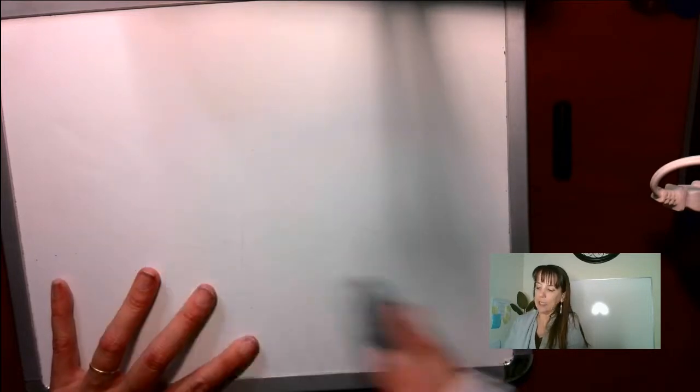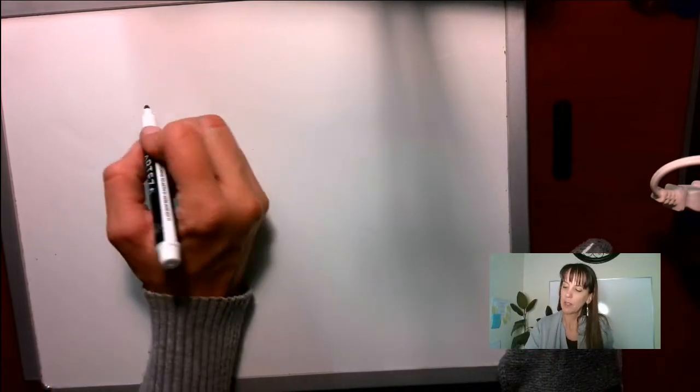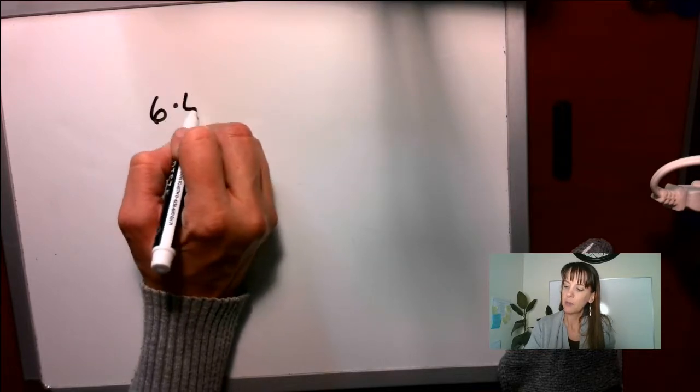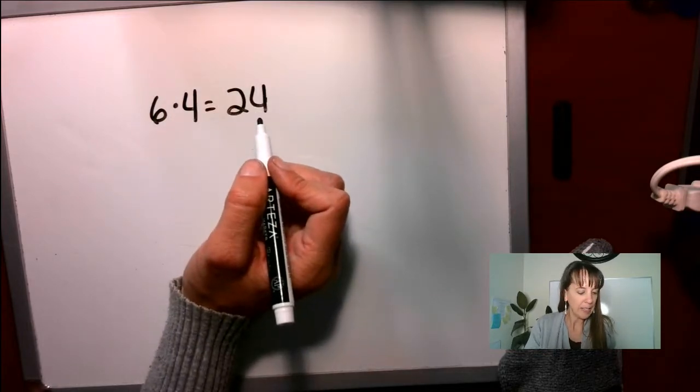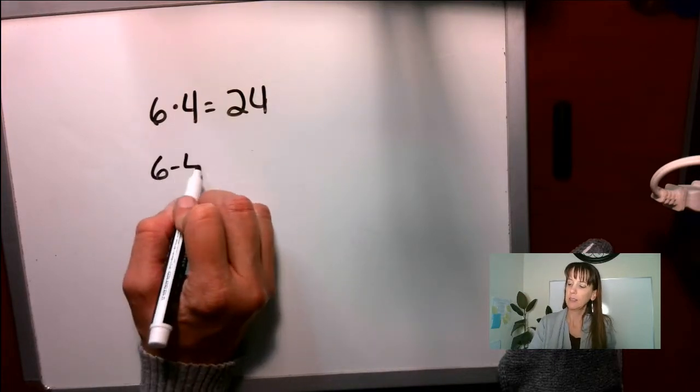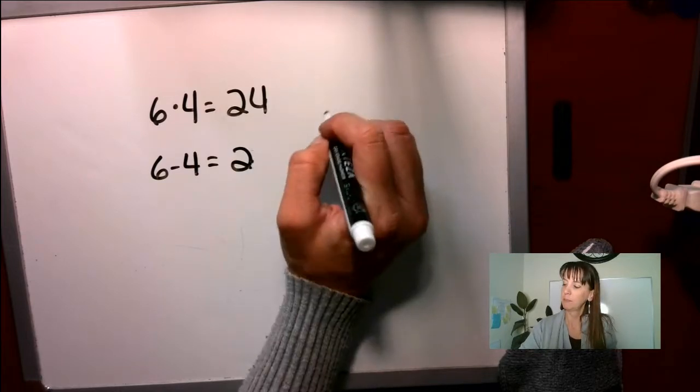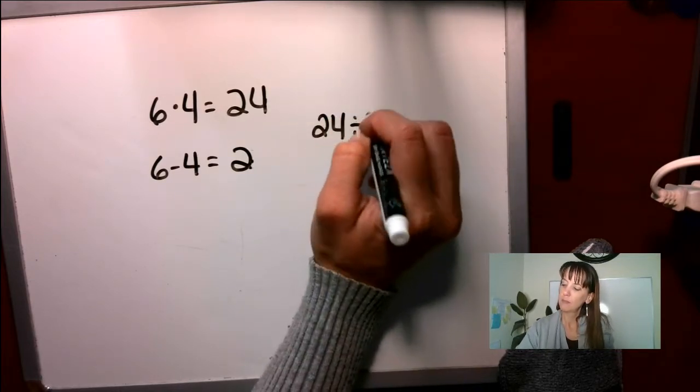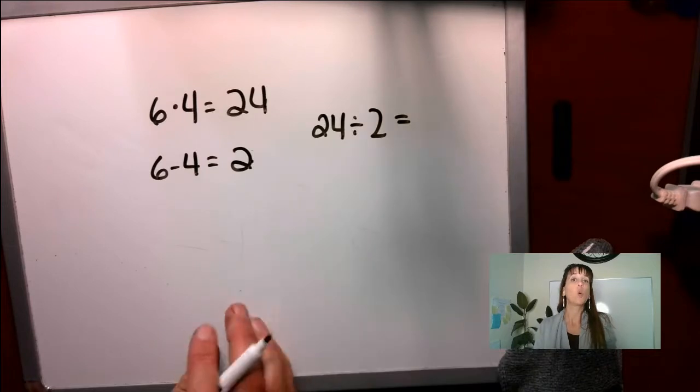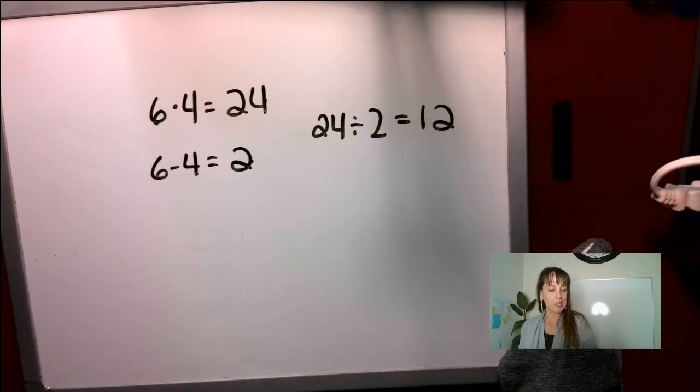And E. What is, or when the product of 6 and 4, 6 times 4 equals 24, is divided by the difference of 6 and 4. The difference means subtract. So when this is divided by this, what is that quotient? That's this guy. It's going to be 12. 12. Good.